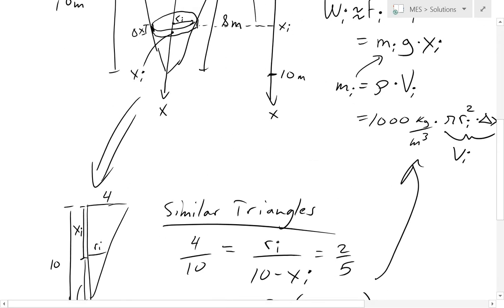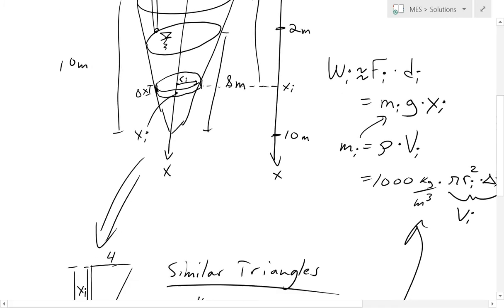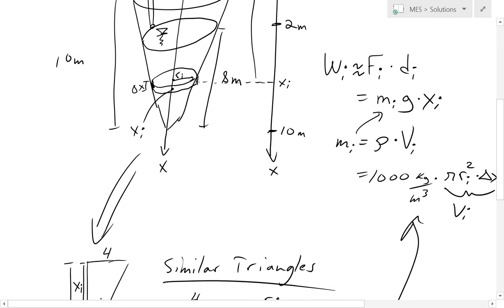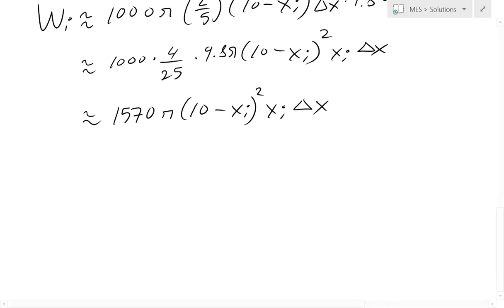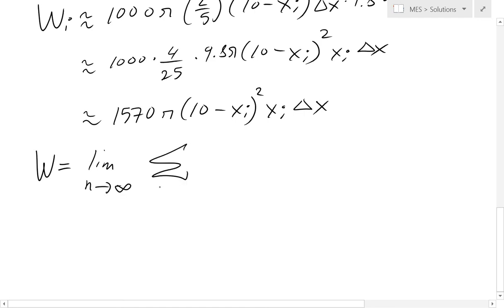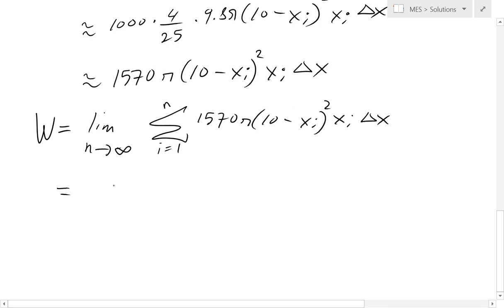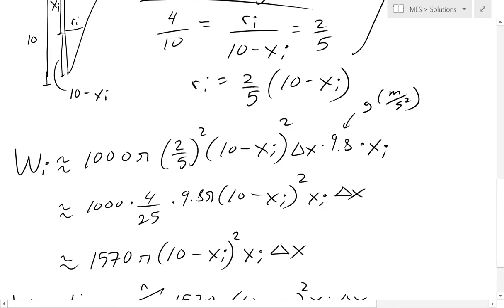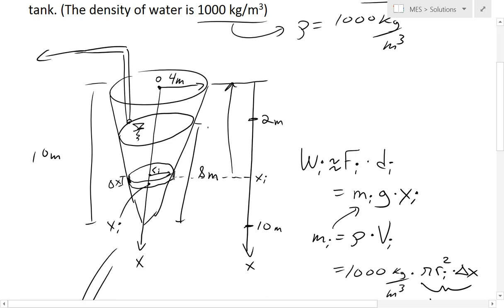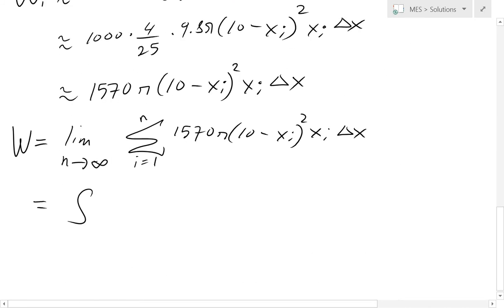Using the definition of the integral, if we imagine an infinite number of slices all really small, the total work equals the limit as n goes to infinity of the summation from i = 1 to n of 1,570π·(10 − x_i)²·x_i·Δx. We can write this as an integral. We integrate from x = 2 to x = 10, since that is the extent of the water.